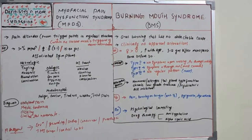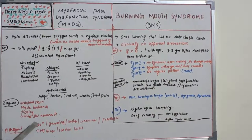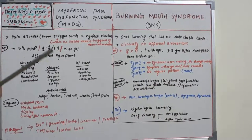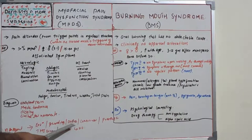Diagnosis of MPDS relies on four criteria: unilateral pain, muscle tenderness, clicking, and limited jaw movements. Treatment involves seven R's of occlusal rehabilitation: Remove (extraction of teeth), Reshape (grinding occlusal high points), Reposition (orthodontic treatment), Restore (conservative fillings), Replace (prostheses), Reconstruct (TMJ surgery), and Regulate (control of habits and symptoms).